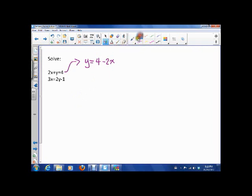And now what I'm going to do is I'm going to take this and I'm going to sub it in for that y. So what I'll end up with is 3x is equal to 2y, except y is now 4 minus 2x minus 1. So now I just have to solve for x here. Notice I'm down to one equation, one variable.